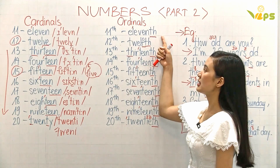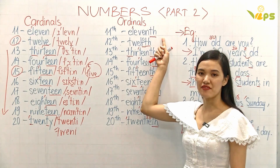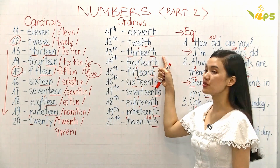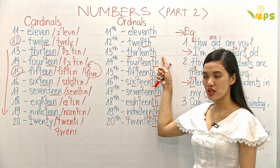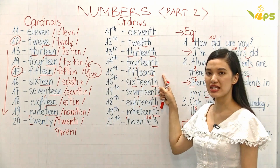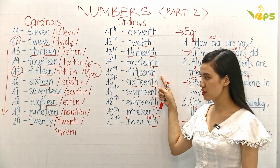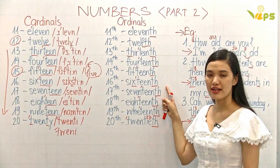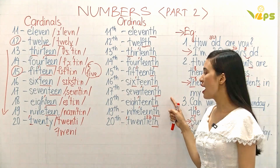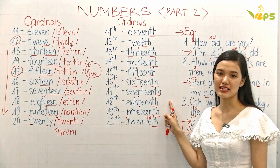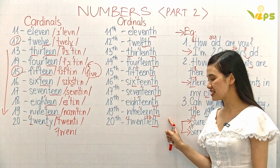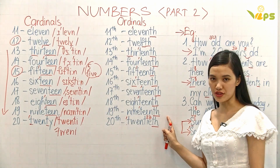One more time: 11th, 11th. 12th, 12th. 13th, 13th. 14th, 14th. 15th, 15th. 16th, 16th. 17th, 17th. 18th, 18th. 19th, 19th. 20th, 20th — right?